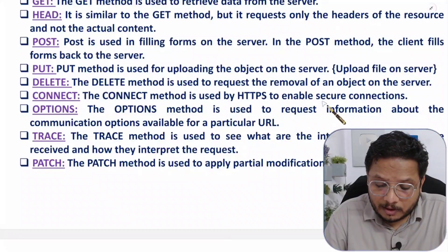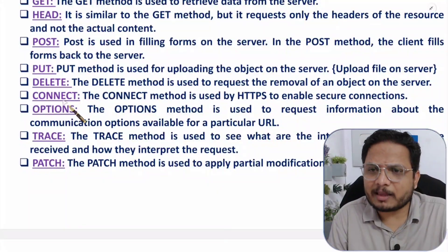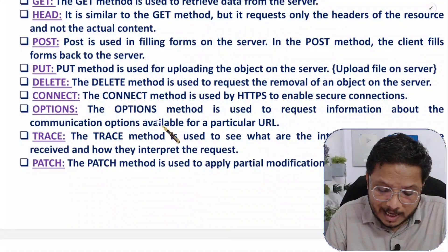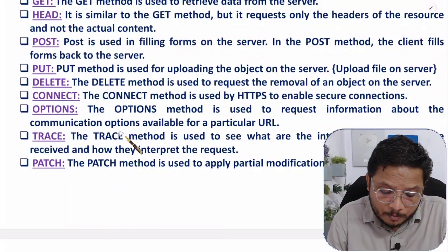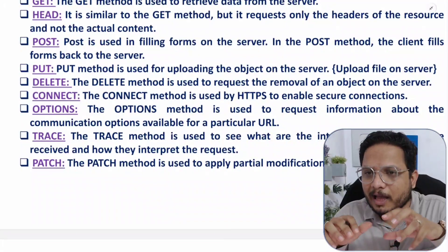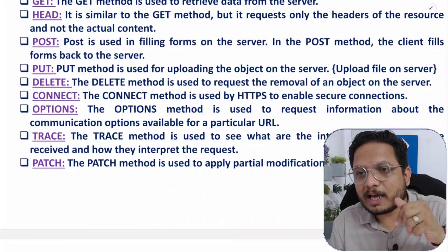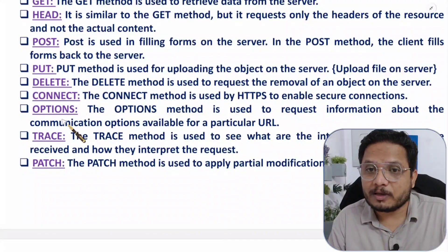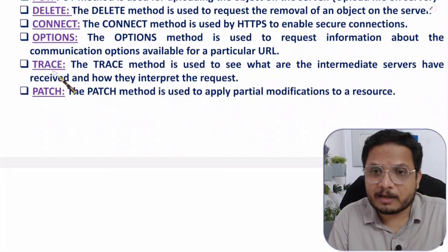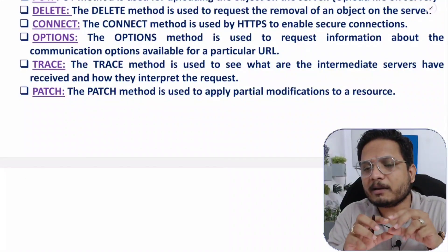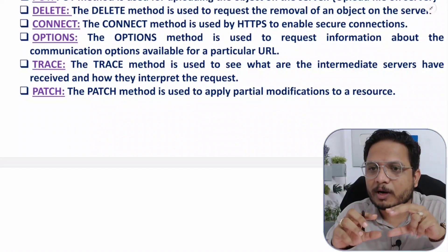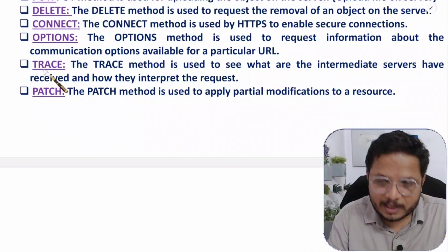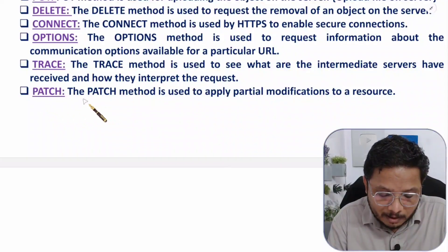The CONNECT method is used by HTTPS for secure connections. The OPTIONS method is used to request information about the communication options available for a particular URL — if you want to see how many communication options are available for a URL, you use OPTIONS. The TRACE method is used to see intermediary nodes between a connection.